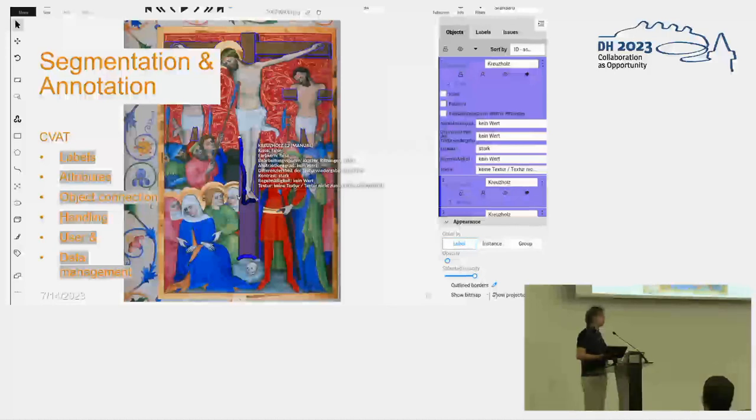And we were looking for a software which meets our requirements which is that we can easily segment difficult objects and to label them of course. But additionally we want to put a lot of attributes to them like the structure of the grain, the painting styles and colors and so on. And also you can see Jesus hanging on the cross also splits the cross into several parts and we want to keep track of those parts which belong together. And of course data and user management is of interest.